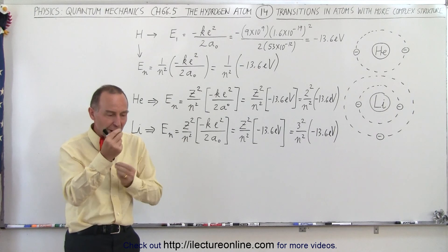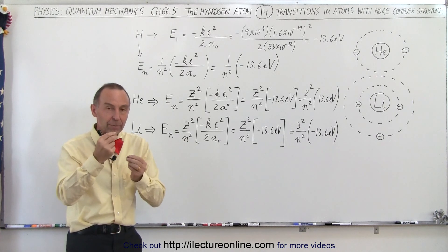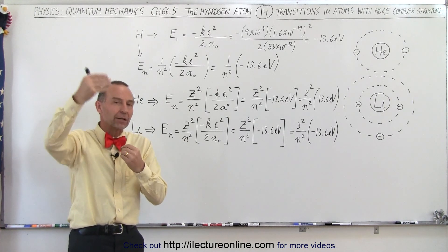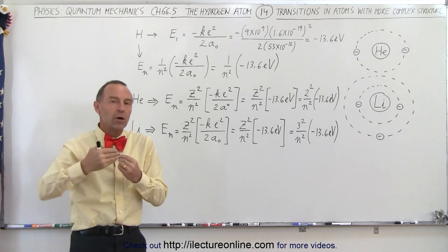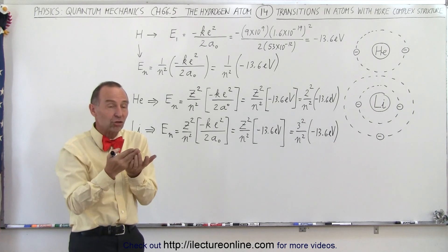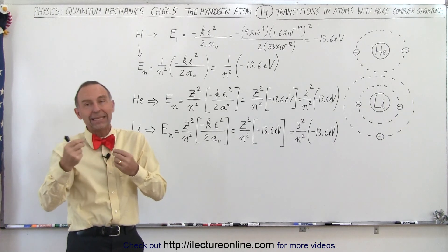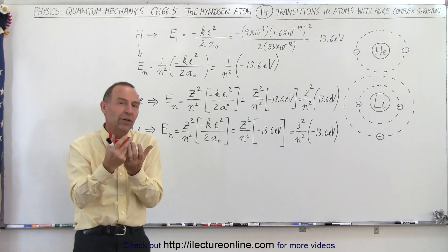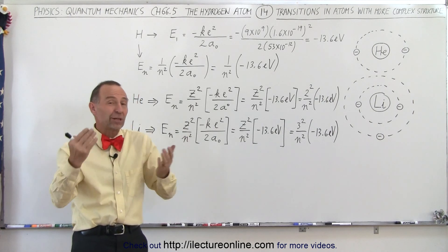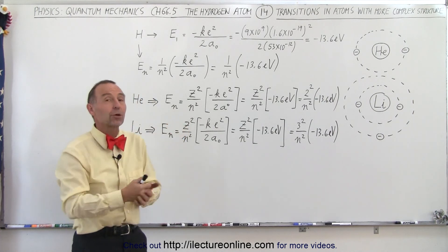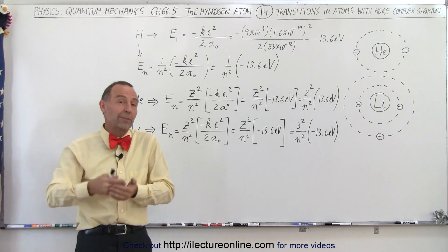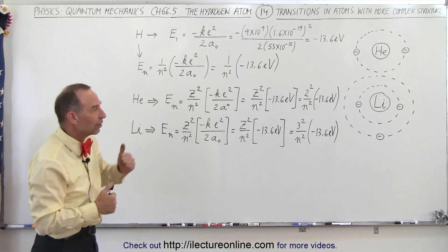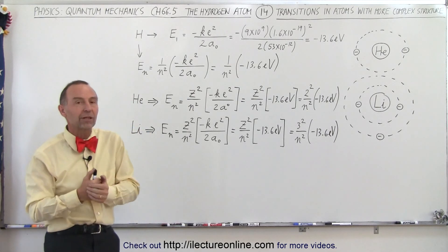The interaction is simply between two particles, the electron and the proton. We have the Coulomb's Law relationship and what we would call centripetal force, and when we set those equal to one another we can develop a lot of the equations describing the velocity, the radius, and the energy of any one of the levels.